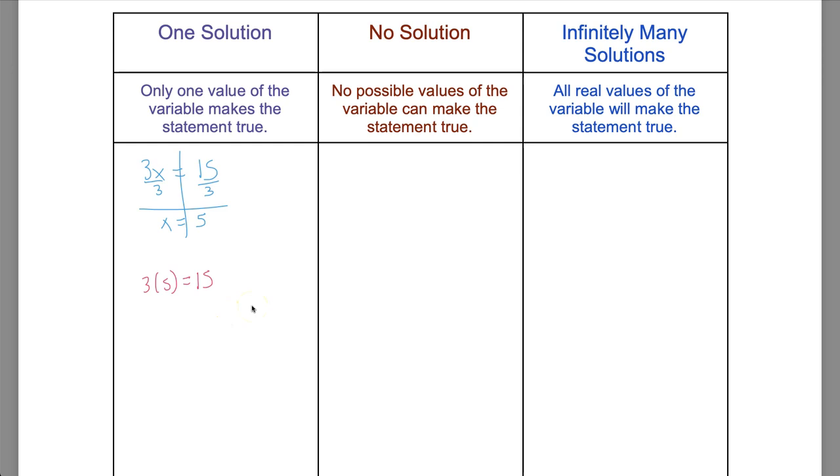But the reality is sometimes it doesn't work like that. Sometimes you end up with situations where no matter what you substitute in for the variable, the solution is still impossible to get. Similarly, you'll end up with situations where no matter what you put in, they will work. So let's take a look at a couple examples. If I do 1 plus 6x is equal to negative 2 times negative 3x plus 1, for instance.